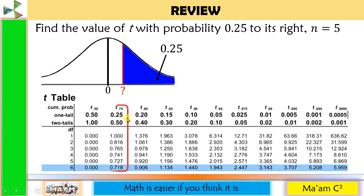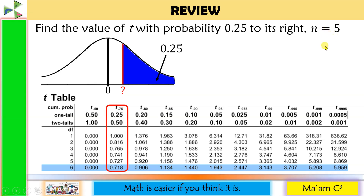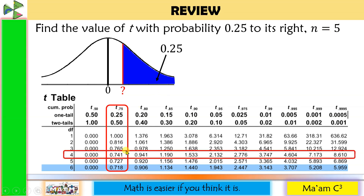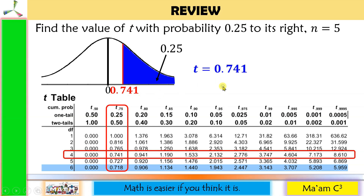Let us box this column. For our degrees of freedom, our given is n, so we have to subtract 1. Five minus 1 is equal to 4, so our degrees of freedom is equal to 4. Let us box this row. The intersection of these two is 0.741, which is our T. Therefore, our T is equal to 0.741.